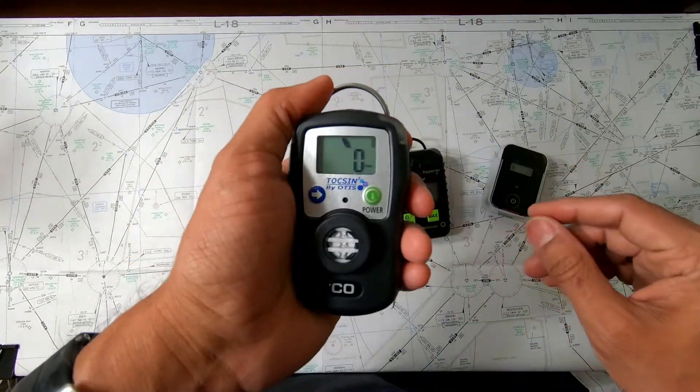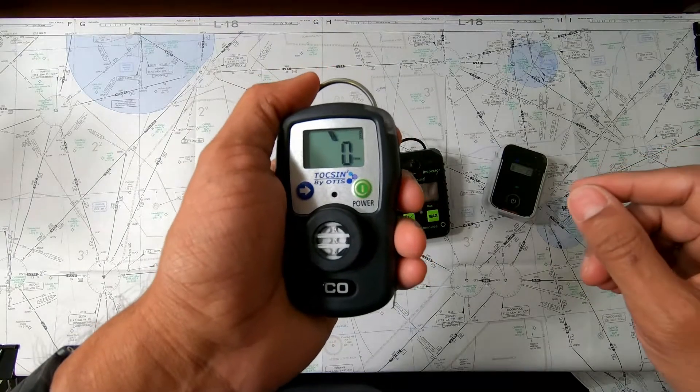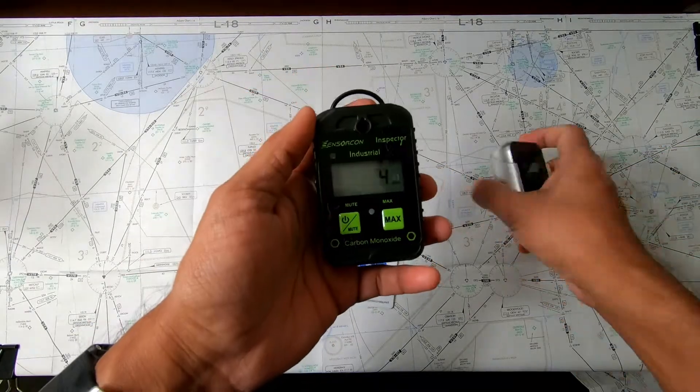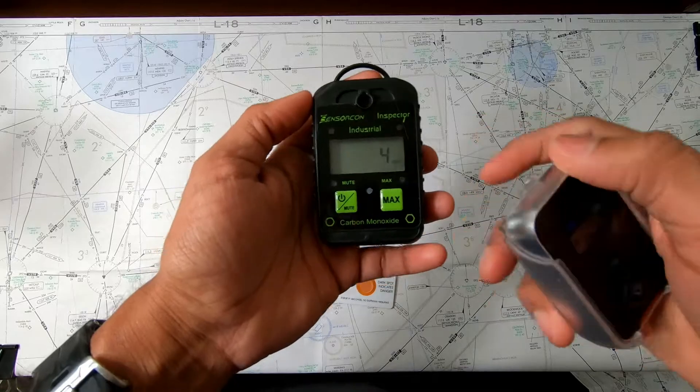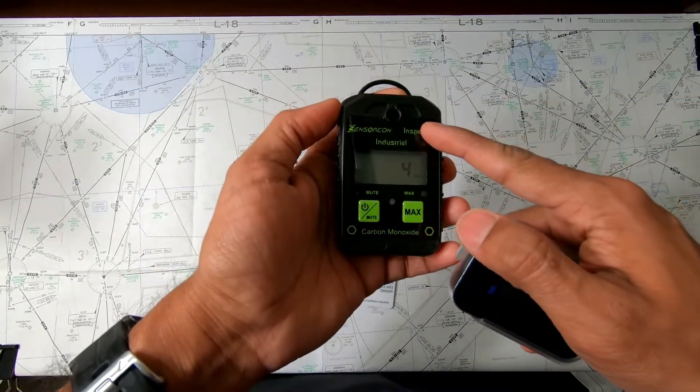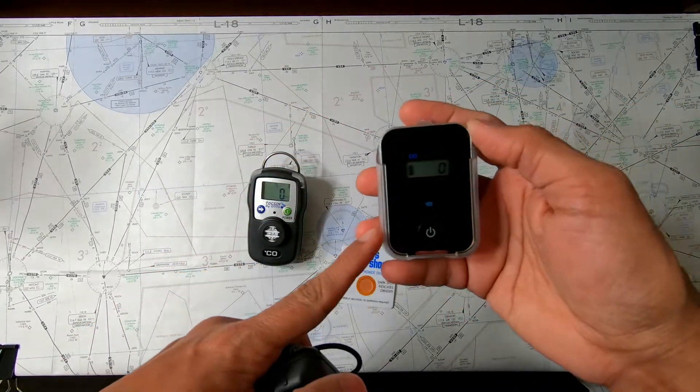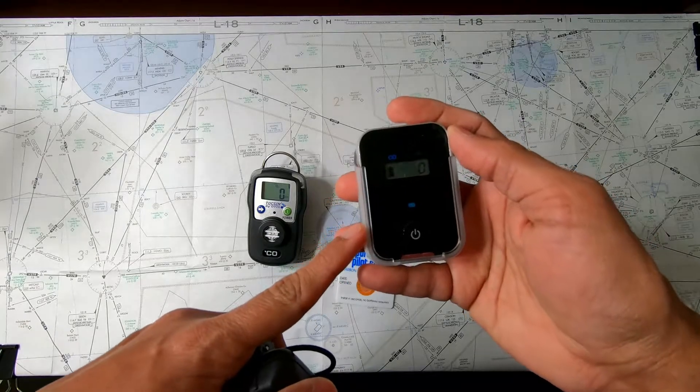Okay, so the price. I bought this unit on the Sporty's website for about $169. I bought these two on Amazon. The SensorCon unit was $179 and the small Forensics unit was about $100.